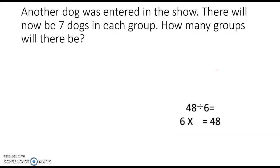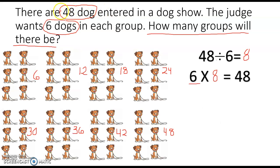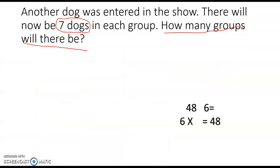Another dog was entered in the show. There will now be seven dogs in each group. How many groups will there be? What is this problem asking us to find? They're asking us to find how many groups there will be. What information will help us solve this? You probably notice it says there will be seven dogs in each group, but it did not tell us how many dogs are in the show — it just says another dog was entered. So we need to go back: there were 48 dogs, now another one was entered, that means there are now 49 dogs.